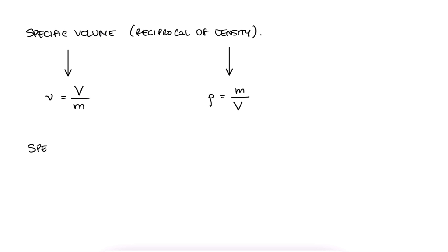And the word specific is also very commonly used to indicate that the specific property value refers to that property per unit mass. Volume per unit mass, specific volume. Heat per unit mass, specific heat. Energy per unit mass, specific energy.